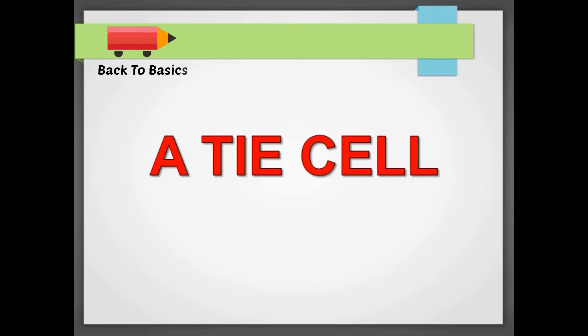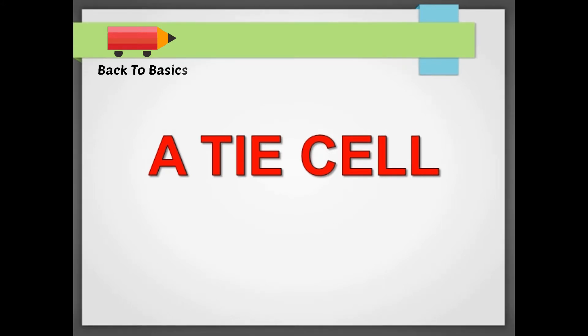Now we know that inputs need to be connected to the gates of the transistor, and there are only two kinds of inputs: logic 1 or logic 0. But we do not connect them directly. We connect them through tie-high or tie-low cells. For logic 1 we use tie-high, and for logic 0 we use tie-low.